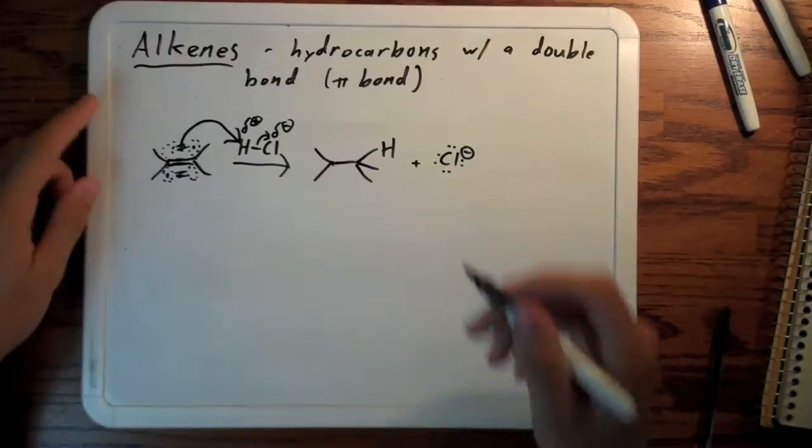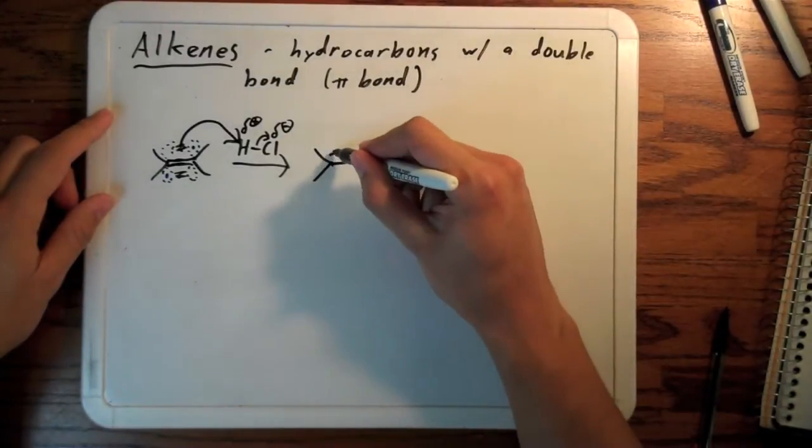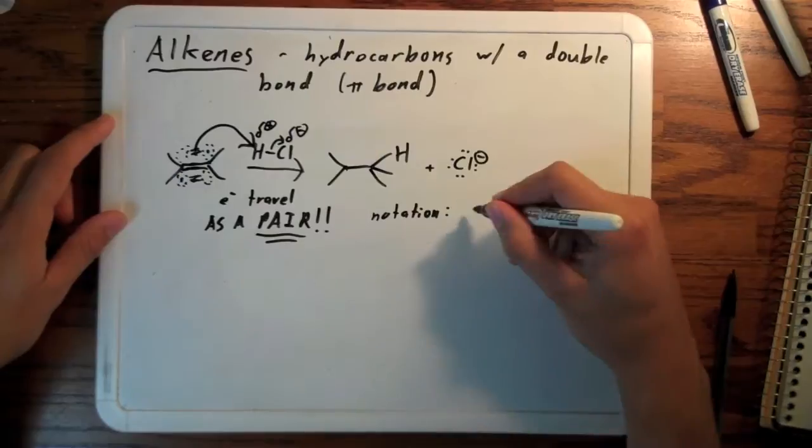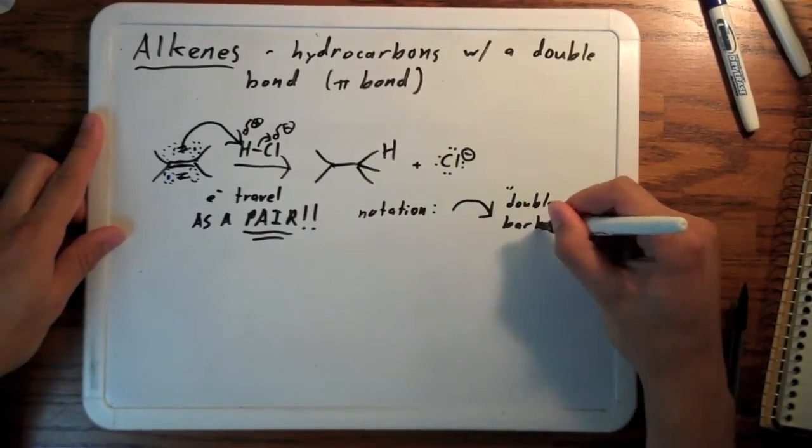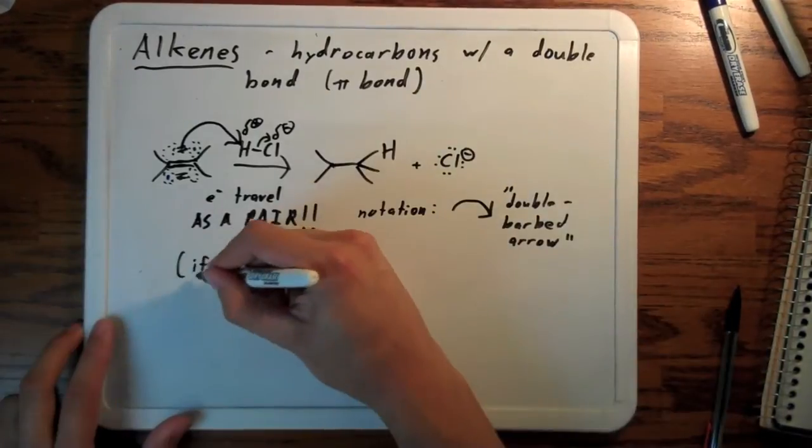I haven't drawn the plus charge yet. Oh jeez, egregious. The notation in organic chemistry for two electrons moving is a double barbed arrow. You'll see it all the time, it's very common.